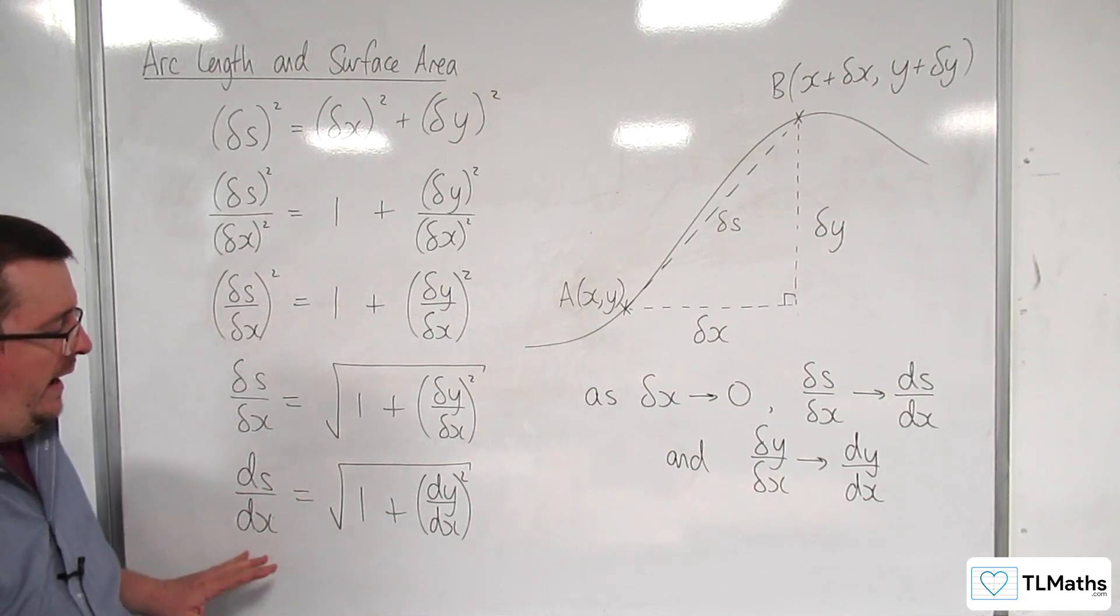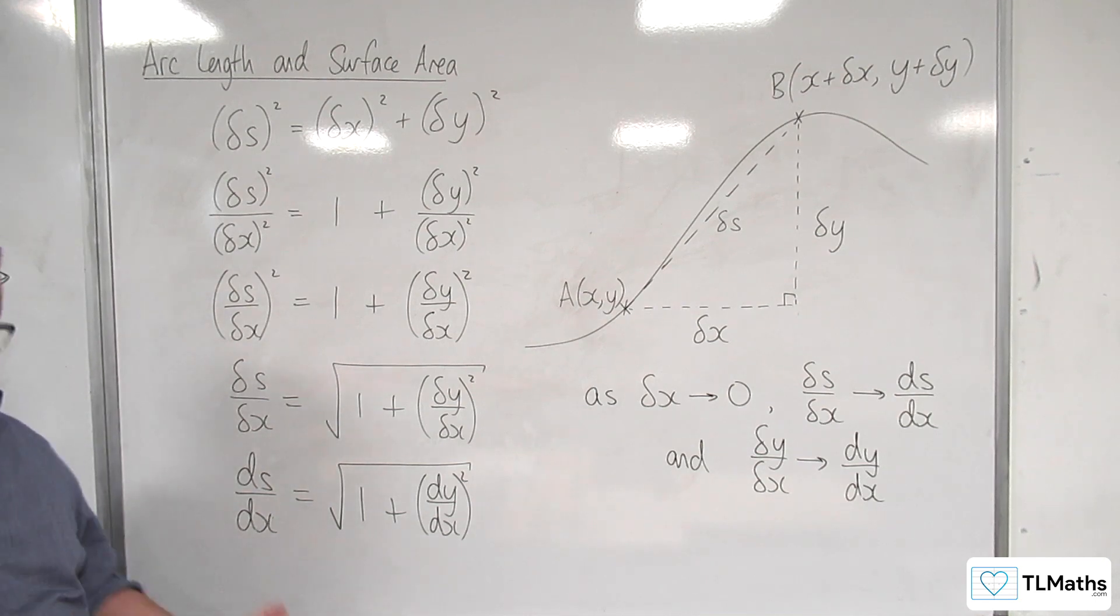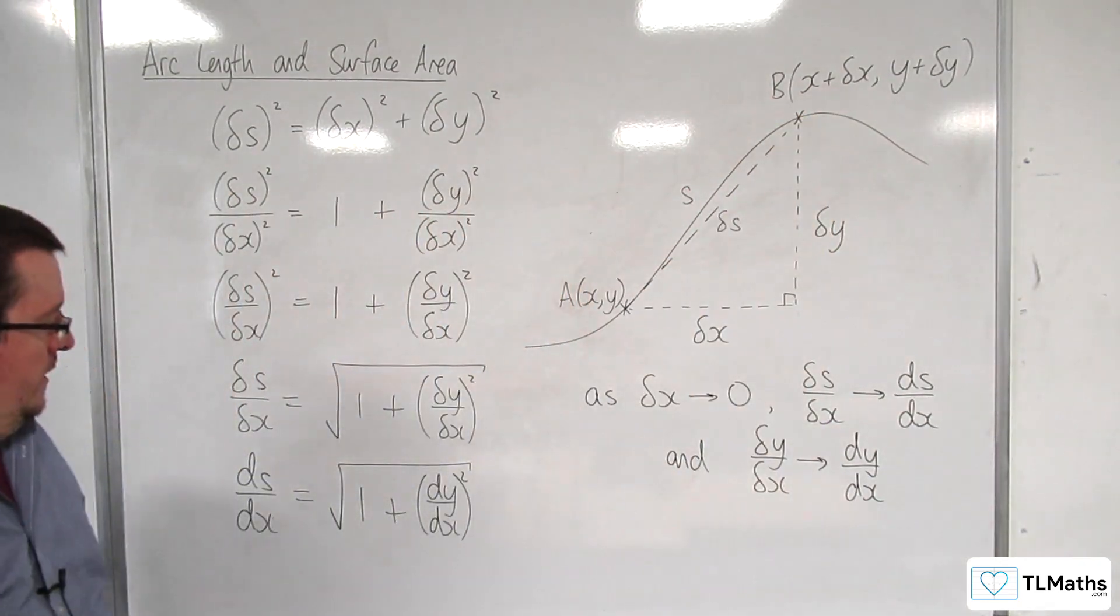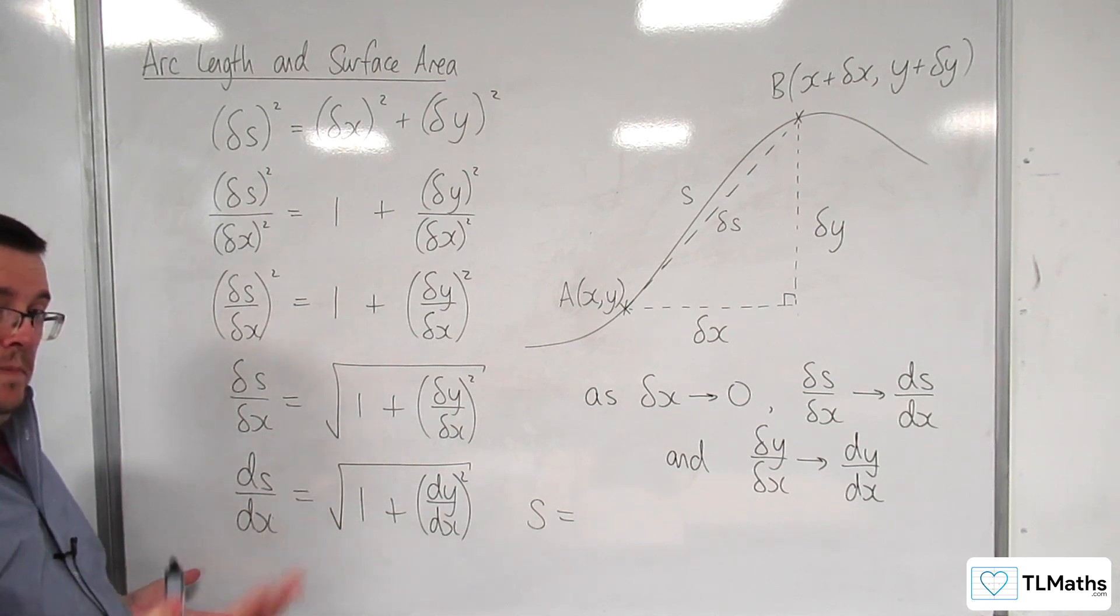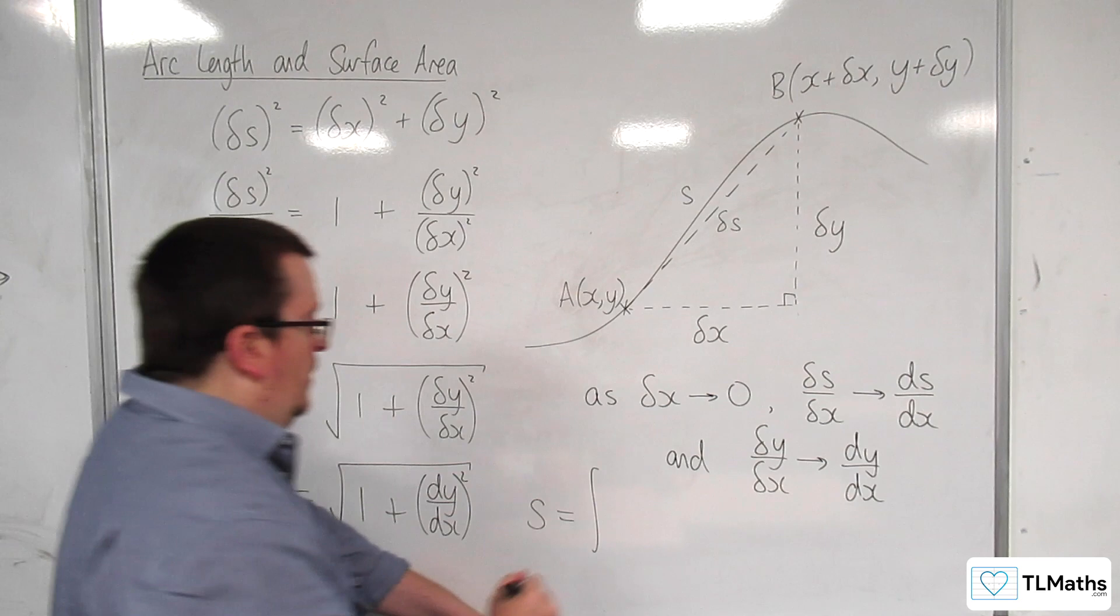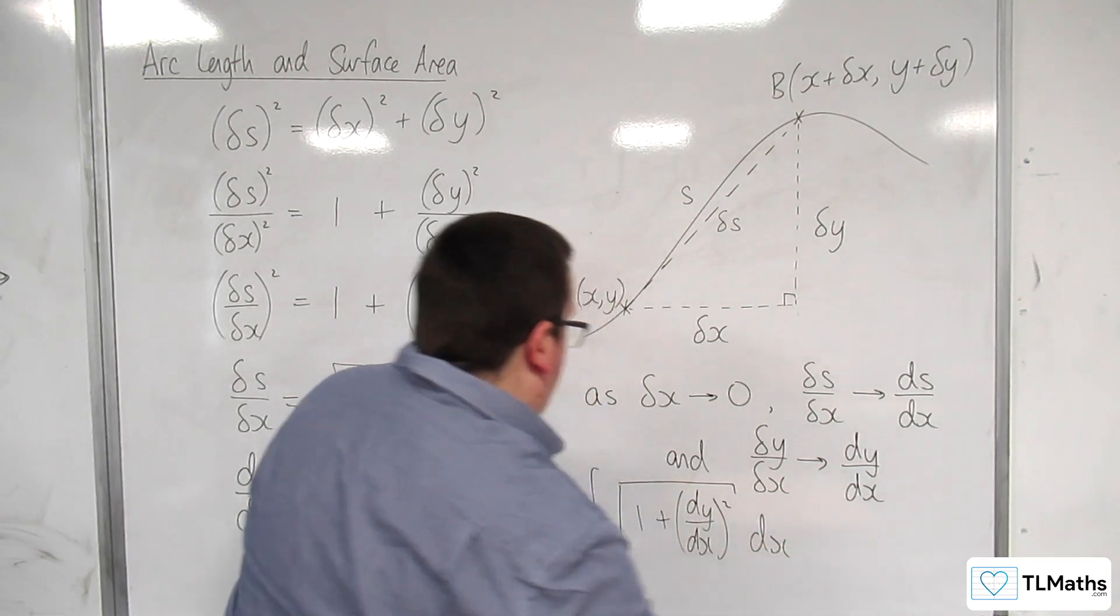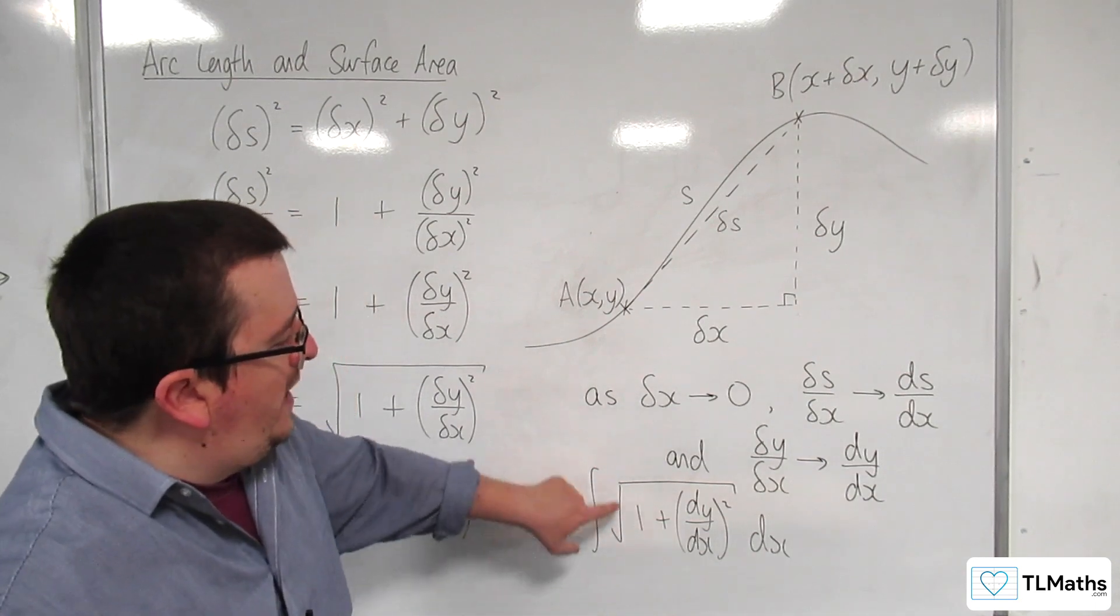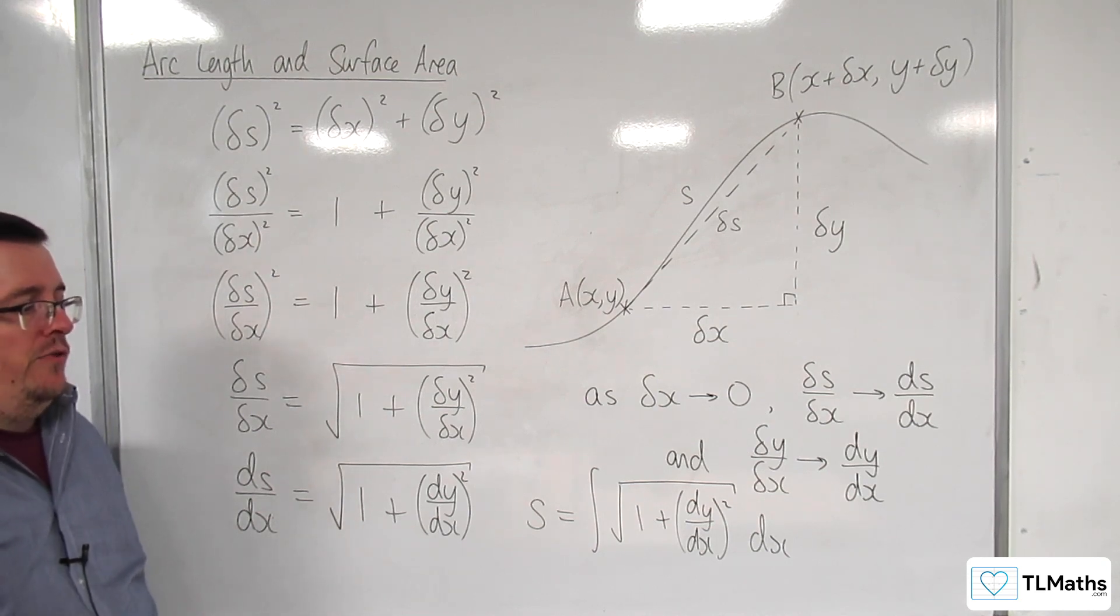So the idea is now I have a relationship between ds by dx and dy by dx. If I wanted to work out S because that's really what I want to find, S here is going to be the actual length of that arc. Well if I integrate both sides of this on the left hand side I'm going to get S with respect to x and on the right hand side I'm going to get the integral of the square root of 1 plus dy by dx all squared integrated with respect to x. And obviously you can put the limits in there and that will be between your two values on the curve that you want to find the length of the arc between. And so that is where the formula for arc length comes from.